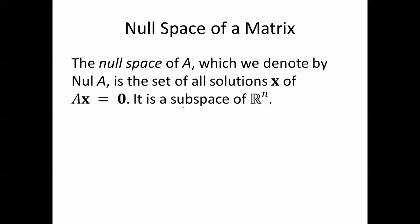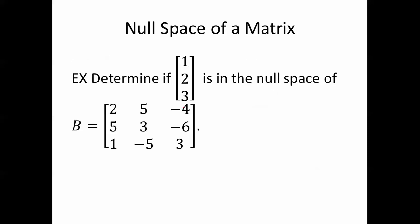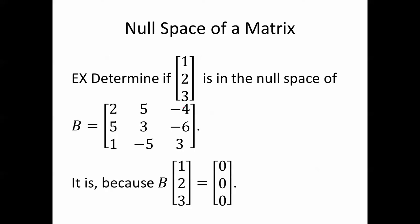The null space of A, which we denote by null A, is the set of all solutions x of Ax equals zero. It is a subspace of R^n. For example, determine if the vector (1, 2, 3) is in the null space of this matrix B. It is, because B times (1, 2, 3) equals (0, 0, 0). That means (1, 2, 3) is in the null space of B.